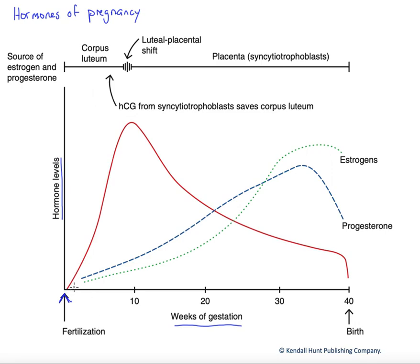At about that one-week point, it will enter the uterine cavity and begin implantation in the endometrial lining of the uterus. Once that occurs, the outer cells that are aiding that implantation — these are the syncytiotrophoblasts — are going to produce a hormone called HCG. This is actually the pregnancy test hormone because it's released almost immediately upon implantation.